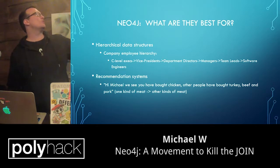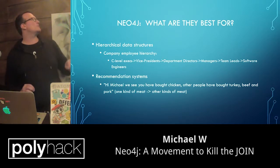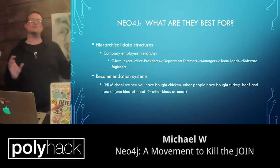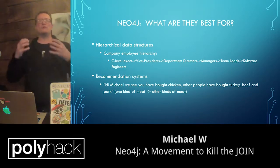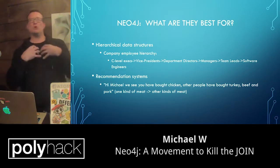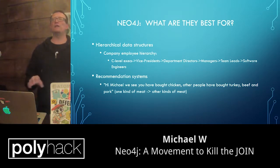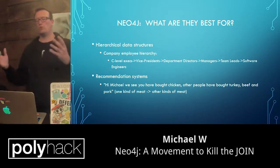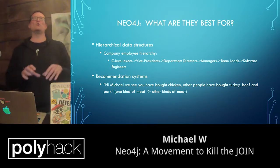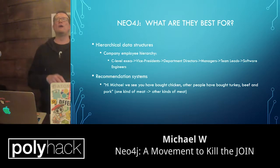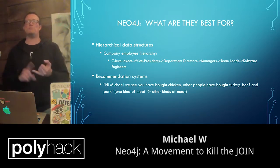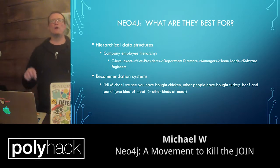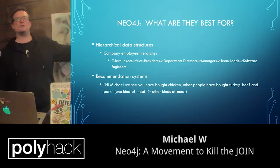Another beautiful application for this type of database is recommendation systems. Let us say, for example, that I like meat — so I have bought chicken at an online food store. It's going to know that I have bought chicken, so I can probably also be interested in buying beef, perhaps pork, fish, or whatever else. So this is actually used for recommendation systems as well.